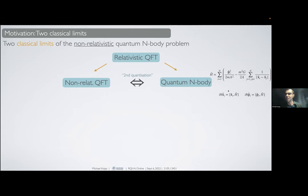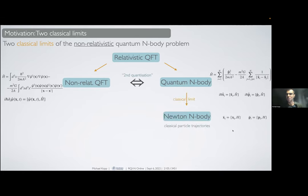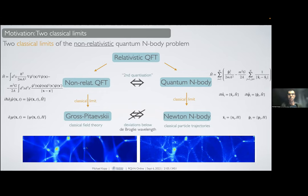The non-relativistic quantum N-body problem has two formulations that are mathematically completely equivalent. One is called non-relativistic quantum field theory, the other one I call quantum N-body problem. In the field formulation, the whole dynamics is encapsulated by the Heisenberg equation for the quantum field. Now you can do the hand-wavy classical limit, which is you turn commutation relations into Poisson brackets. This produces the standard Newtonian particle trajectories or the Gross-Pitaevskii equation.